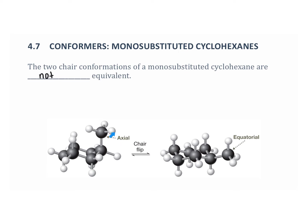If we look at this picture of the molecule here, the CH3, which is shown here in one group, is in the axial position. But when it undergoes a chair flip, now it's in the equatorial position. So these two conformations are not equivalent.